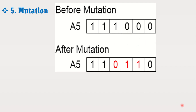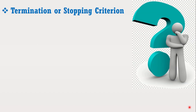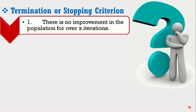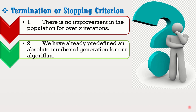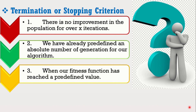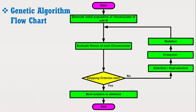These are the basic five steps of the genetic algorithm. The last step is the termination or stopping criterion. There are different termination conditions: first, if there is no improvement in the population for over x number of iterations, we can terminate the program; second, when a predefined absolute number of generations is completed, the program will stop; third, when the fitness function has reached a predefined value. In all of these conditions, it is assumed that the genetic algorithm has provided the best solution to our problem. All these steps are shown in a flowchart as shown in the figure.